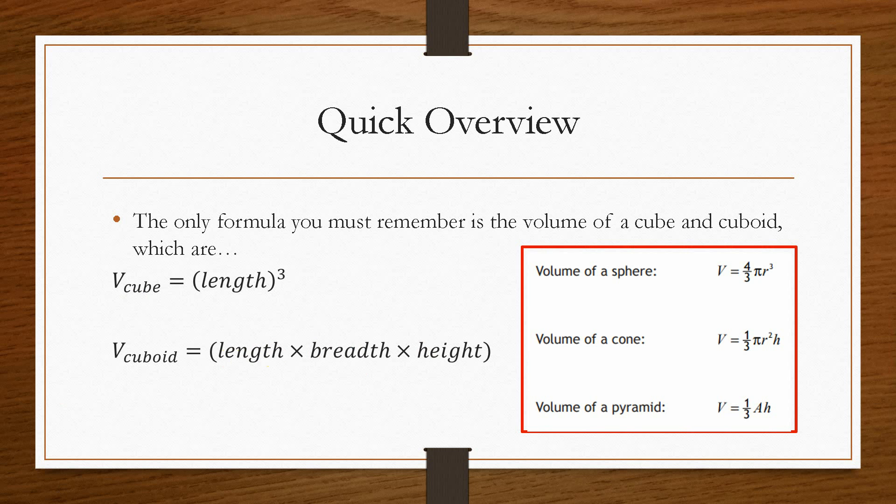Now some of the other volumes is the volume of a sphere. So that would be v equals 4 over 3 pi r cubed. The r cubed provides us with the units cubed. The volume of a cone is very similar, but then we have r squared, and we then have to take into account the height of the cone. And then the volume of the pyramid is a third a multiplied by h. Now a is the cross-sectional area of the pyramid, and then we would multiply that by the height. So that's the key volume formulas that you're going to need in your exam.